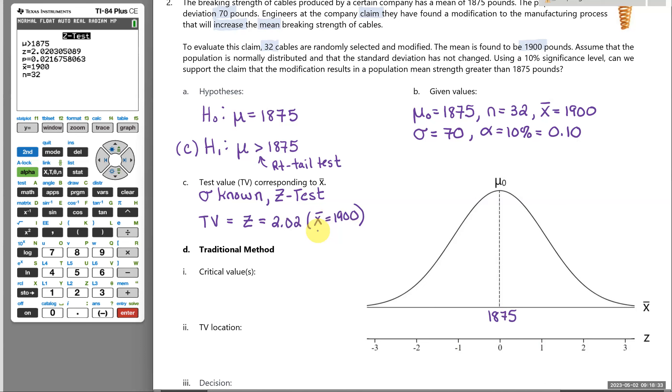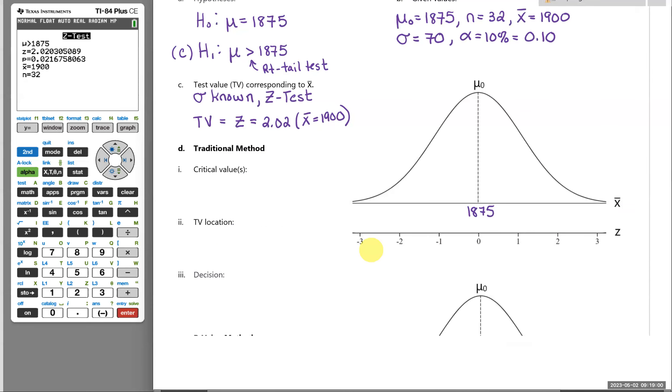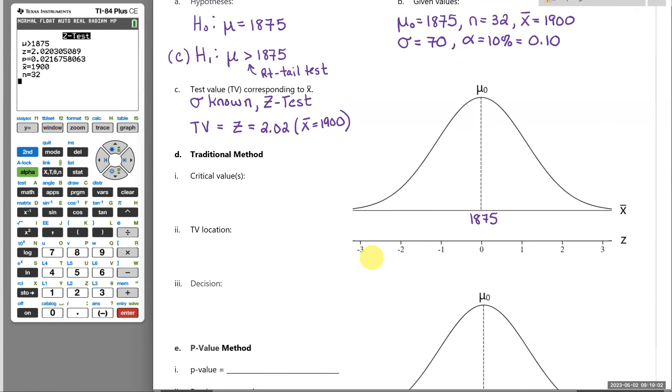All right. So there's two ways to determine that. One is called the traditional method of hypothesis testing. The other method is called the p-value method of hypothesis testing. In both cases, we're just trying to find a way to see if this value for our x-bar is far enough to the right to be convincing that the mean is not 1,875 truly for the population. All right. So let's go with traditional method first.